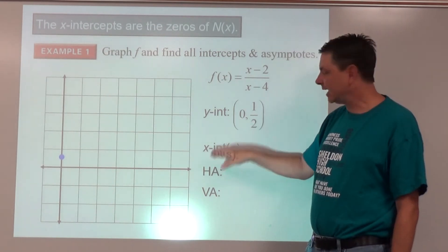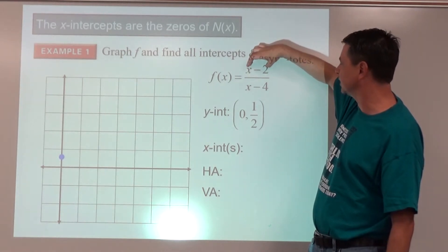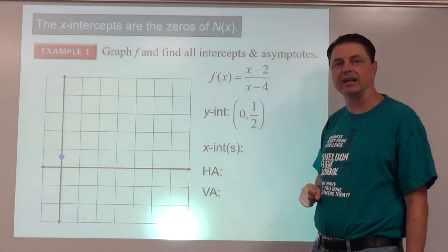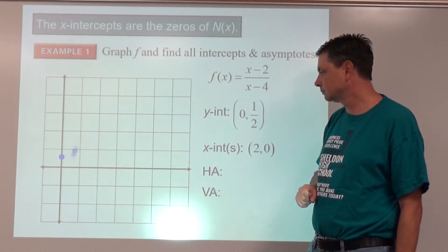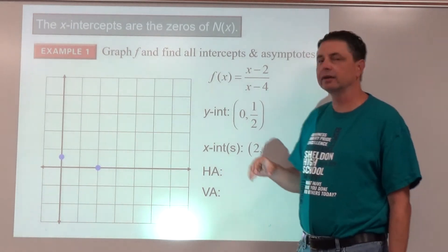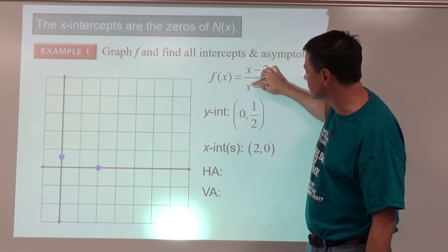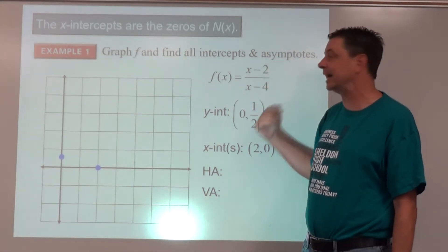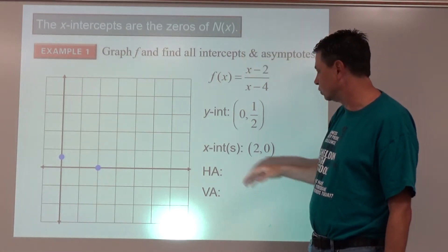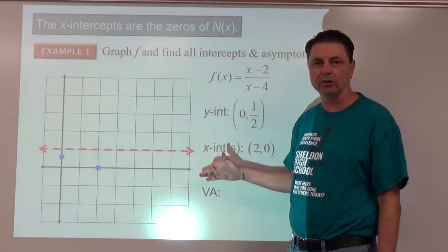X-intercepts come from the numerator — set the numerator equal to zero and solve. x minus 2 equals zero tells us there's a zero of the function at x equals 2, so an x-intercept at (2, 0). For horizontal asymptotes, we compare degrees — both have an invisible exponent of one, so the degrees are the same. The horizontal asymptote is at leading coefficient over leading coefficient: 1 over 1 equals 1, so y equals 1.